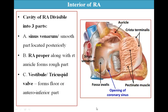The interior of the right atrium. The cavity of the right atrium is divisible into three parts. First is the sinus venarum, which is the smooth part located posteriorly. Second part is the right atrium proper, along with the right auricle, which forms the rough part. Third is the vestibule or the tricuspid wall, which forms the floor or the anteroinferior part of the right atrium.